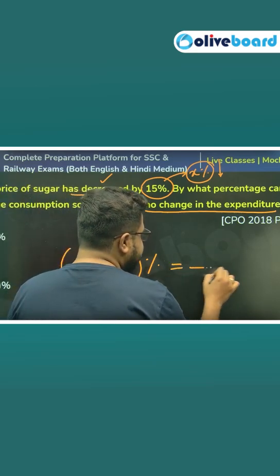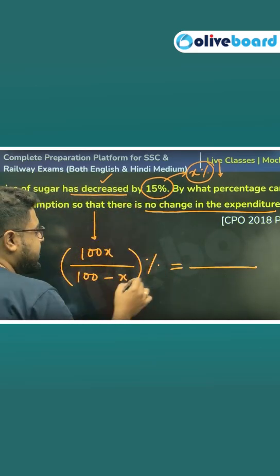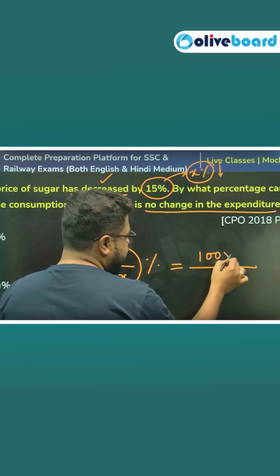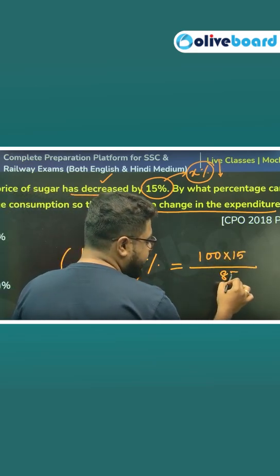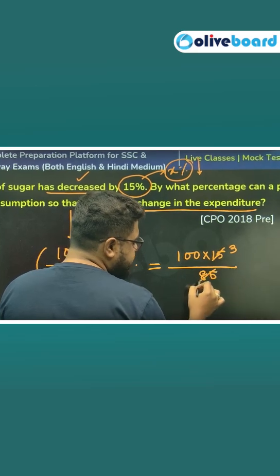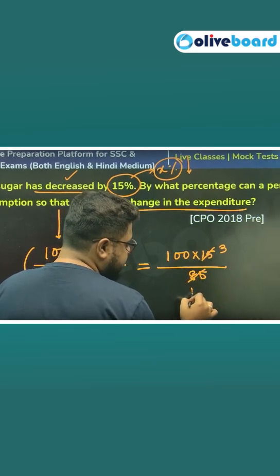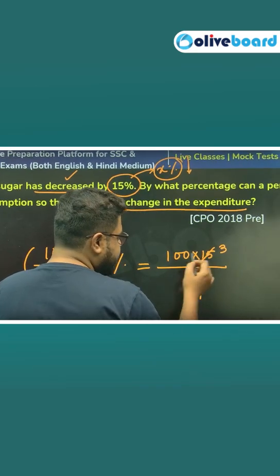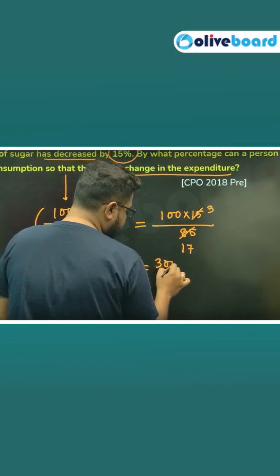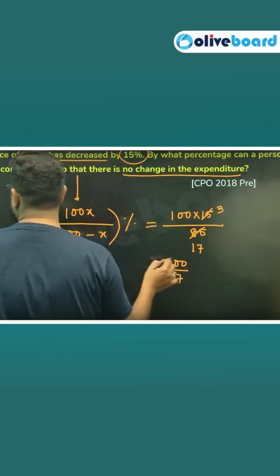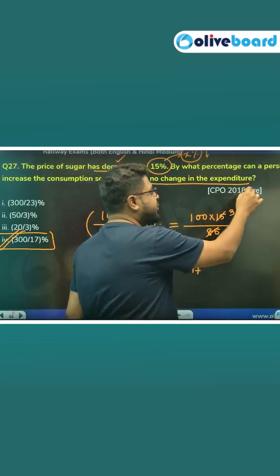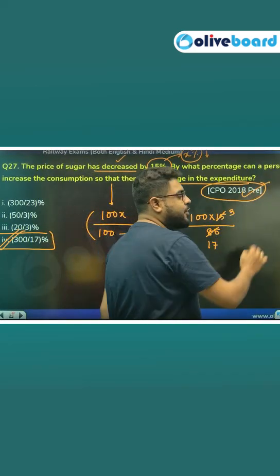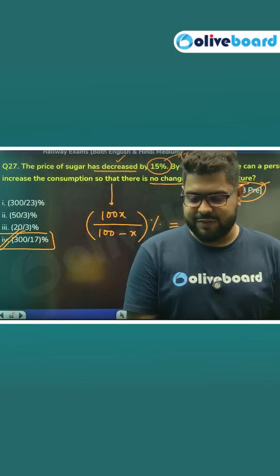Let's use this directly in this question. Here x is 15, so we use 100 into 15 divided by (100 minus 15), which is 85. Simplifying, 5 times 3 over 5 times 17, giving us 300 by 17. The answer is in this format — this is a question from CPO 2018, and I hope this is absolutely clear to everyone.